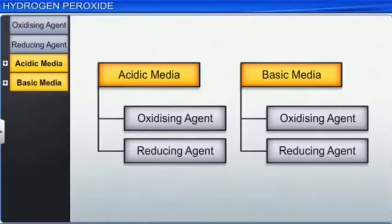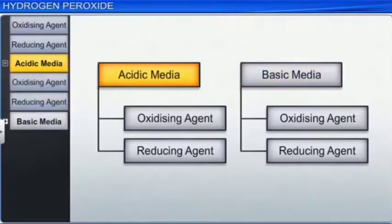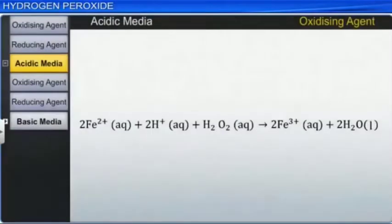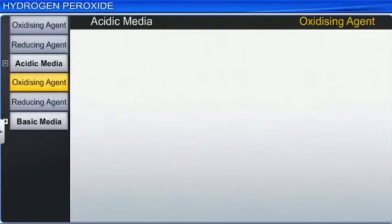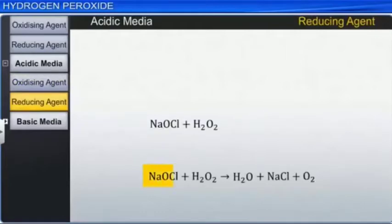In an acidic medium, as an oxidizing agent, hydrogen peroxide reacts with ferrous ions to form ferric ions. As a reducing agent, it reacts with sodium hypochlorite and yields water, sodium chloride salt and oxygen. This reaction is also used in laboratories to prepare oxygen.